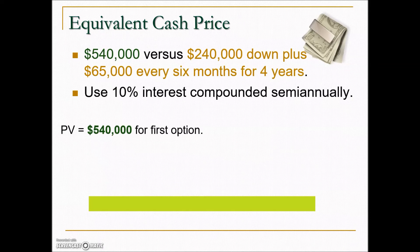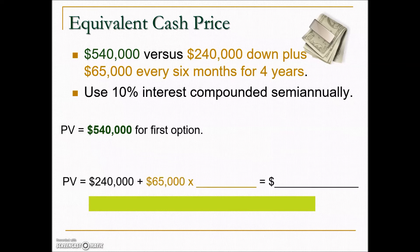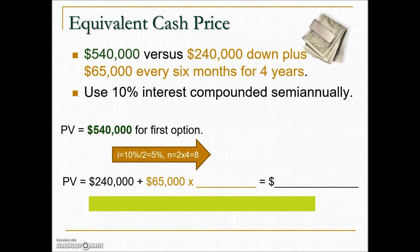The cash price of $540,000 has a present value of $540,000 — no question. For the second option, there is a down payment, so we have a present value of $240,000 right away. We still need the present value of the payments of $65,000 every six months. The interest rate per compounding period is 10% divided by 2, giving us 5%. Two payments per year for four years means a total of eight compounding periods.